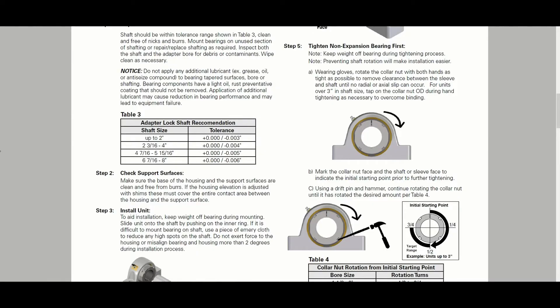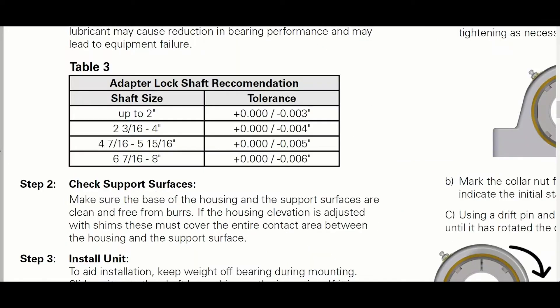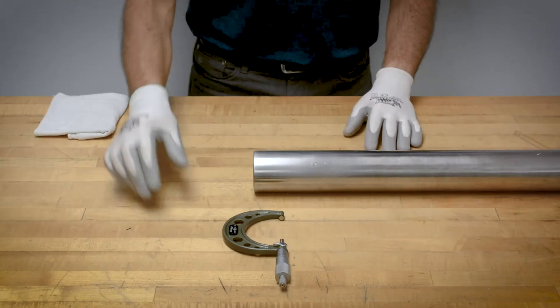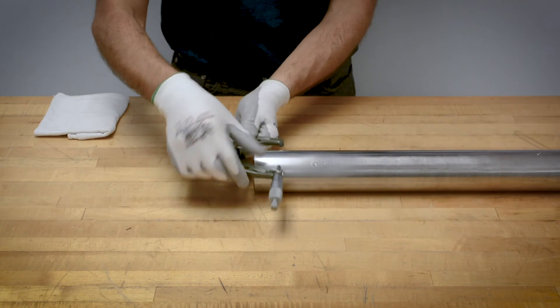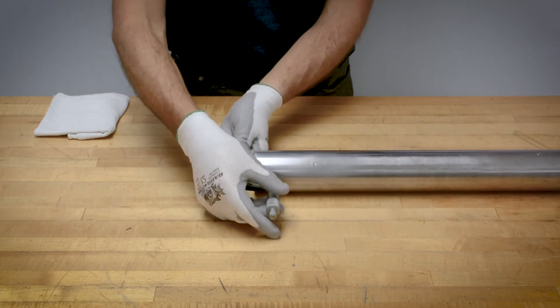USRB clamp lock adapter lock is designed to be used with commercial shafting. Use a micrometer, if necessary, to ensure the shaft is within the tolerance shown.